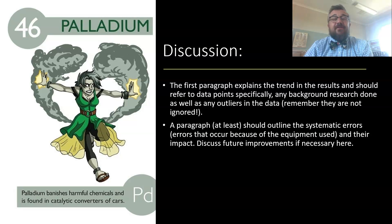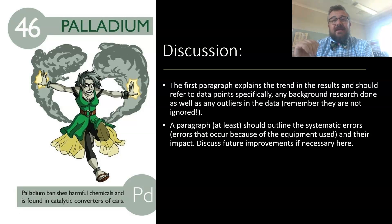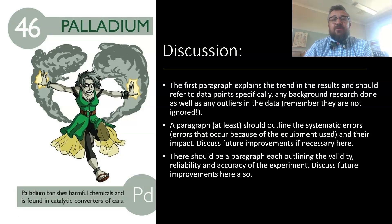We should have a paragraph at least outlining the systematic errors — errors that occur because of the equipment used. For example, one systematic error might be if we've got a measuring cylinder accurate to plus or minus 0.5 milliliters, meaning anything we measure will be off by 0.5 milliliters in either direction. We need to talk about that impact, discuss future improvements such as getting more accurate equipment, and how we can work on it.